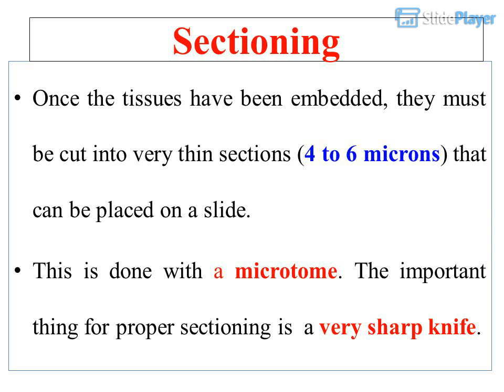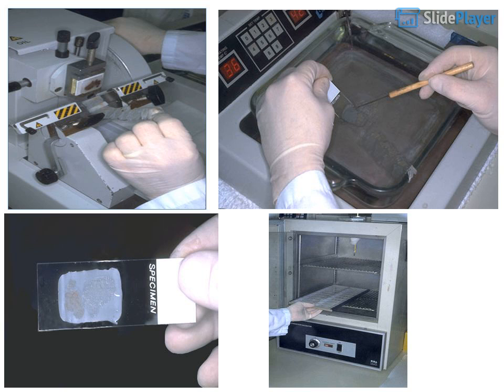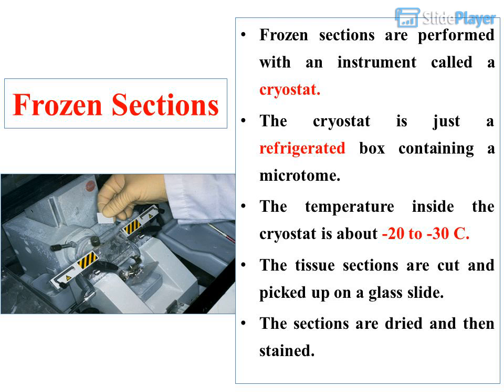Sectioning: Once the tissues have been embedded, they must be cut into very thin sections, 4 to 6 microns, that can be placed on a slide. This is done with a microtome. The important thing for proper sectioning is a very sharp knife. Frozen sections are performed with an instrument called a cryostat, which is a refrigerated box containing a microtome. The temperature inside the cryostat is about minus 20 to minus 30 degrees Celsius. The tissue sections are cut, picked up on a glass slide, dried, and then stained.